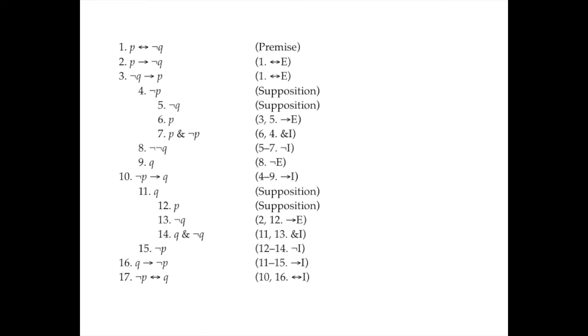That's the hard part of this problem. This proof is quite a bit more complicated than anything we've done previously — thirty-nine lines, many non-obvious steps, four suppositions in a row at the start. Now I'm going to look at the second proof, which is considerably easier. The premise is p↔¬q and I'm going to use that to prove ¬p↔q. I'll use my biconditional elimination rule, so line two says p→¬q and line three says ¬q→p.